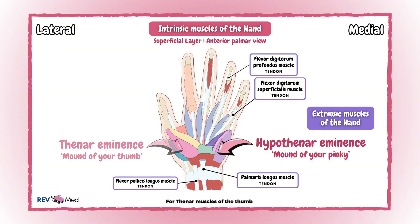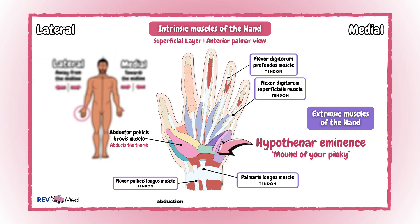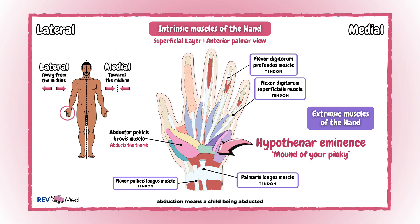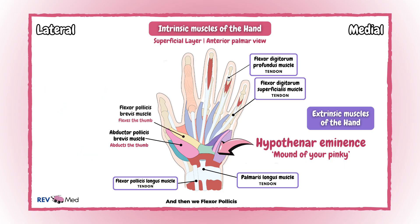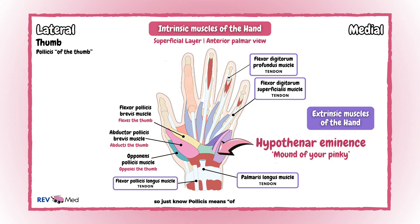For the thenar muscles of the thumb, we have the abductor pollicis brevis, whose action is to abduct the thumb — abduction meaning moving away from the midline. Then we have the flexor pollicis brevis, which flexes the thumb. And finishing off the thenar muscles is the opponens pollicis muscle, which opposes the thumb by rotating it towards the palm. Just know that pollicis means 'of the thumb' in Latin.